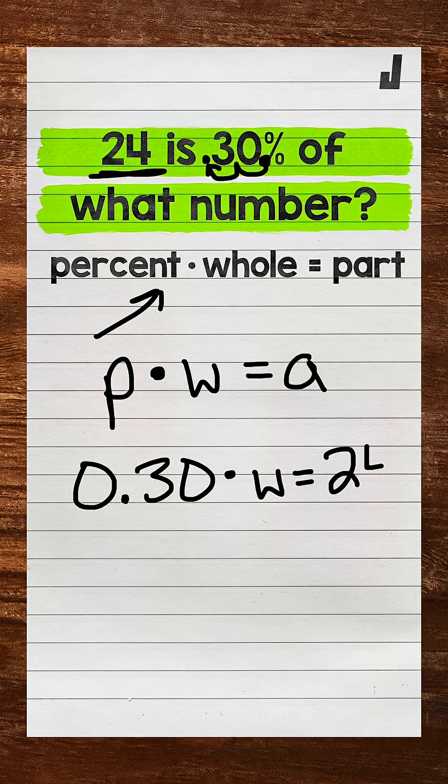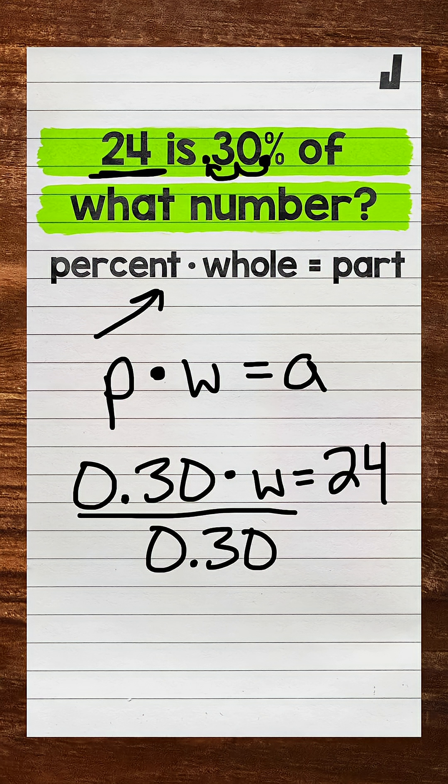So now we have a one-step equation to solve here. We need to solve for W. So we need to isolate that variable. W is being multiplied by 30 hundredths. So we need the inverse operation, the opposite operation. That's division. So divide the left side of the equation by 30 hundredths. Whatever we do to one side of an equation, we must do to the other. So divide the right side by 30 hundredths as well.